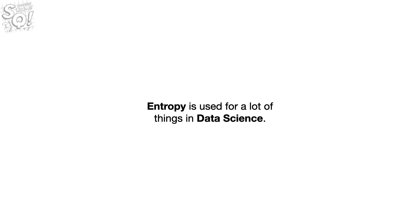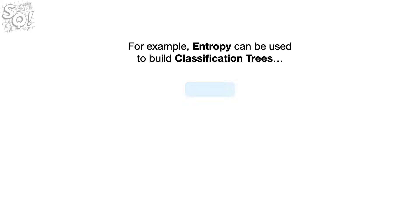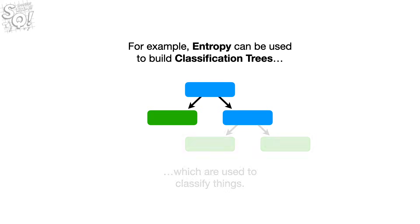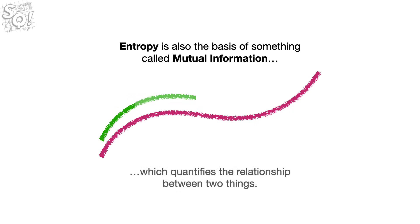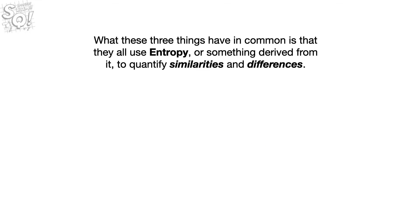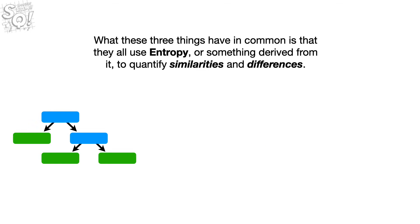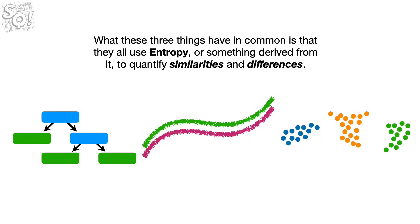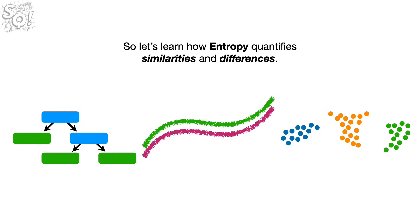Entropy is used for a lot of things in data science. For example, entropy can be used to build classification trees, which are used to classify things. Entropy is also the basis of mutual information, which quantifies the relationship between two things. And entropy is the basis of relative entropy, a.k.a. the Kullback-Leibler distance, and cross entropy, which show up all over the place, including fancy dimension reduction algorithms like T-SNE and UMAP. What these three things have in common is that they all use entropy, or something derived from it, to quantify similarities and differences. So let's learn how entropy quantifies similarities and differences.